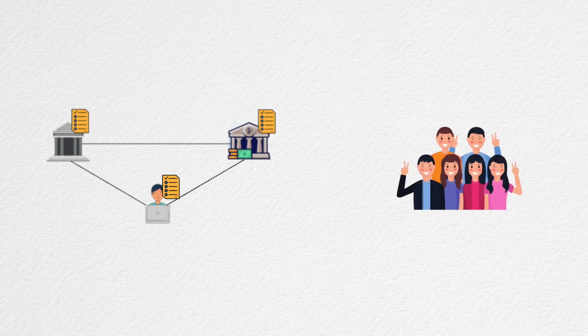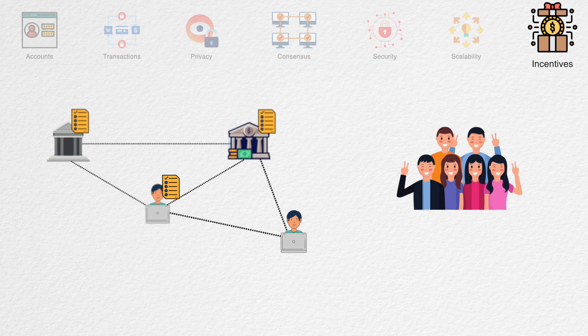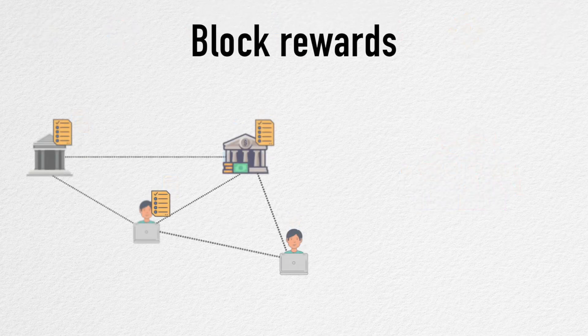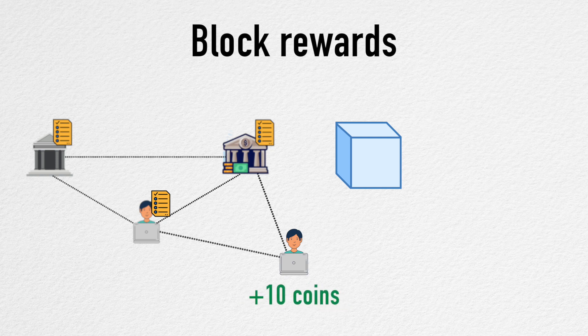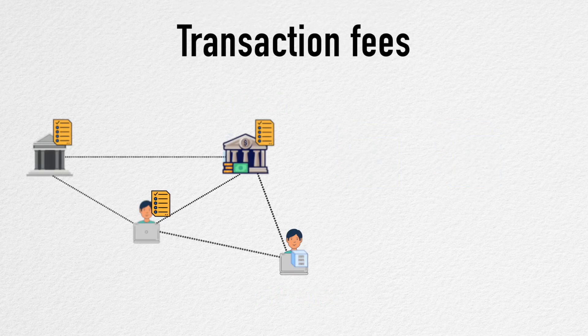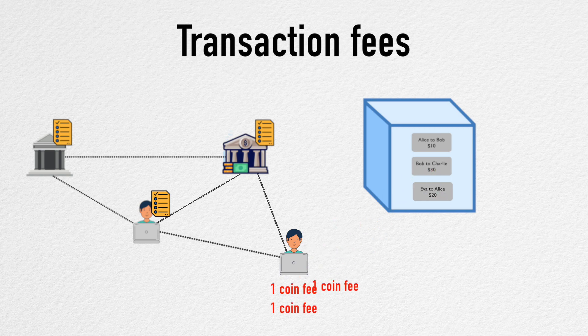A blockchain runs on resources volunteered by its community. Incentives are a way to encourage participants to join and contribute to a specific blockchain, so most implementations incorporate some incentive model. Commonly this takes the form of block rewards — the node that creates the next block is rewarded newly created coins, which can be how new coins come into existence. Or transaction fees — the node that creates the next block takes a transaction fee from all transactions that make up the block. There are other forms of incentives and I'll cover them in future videos.